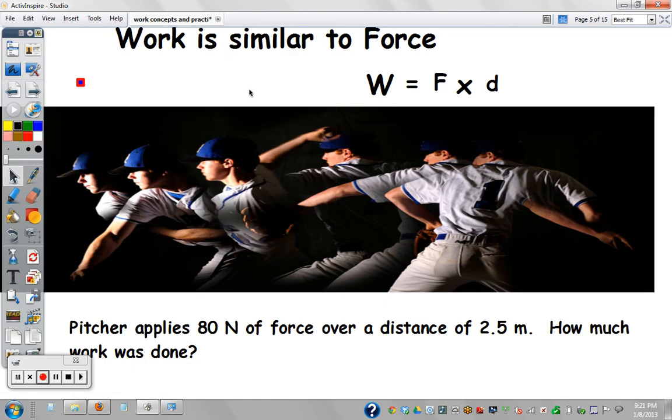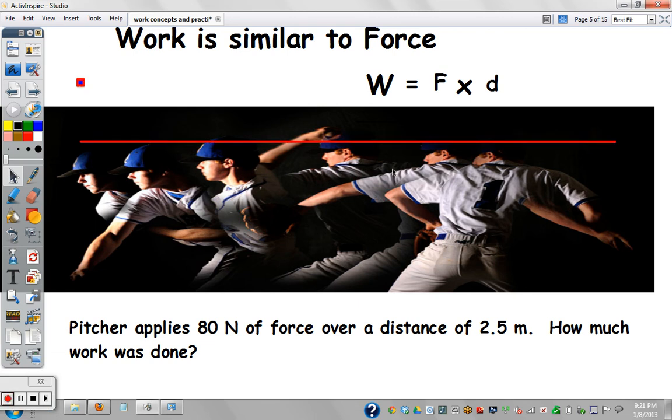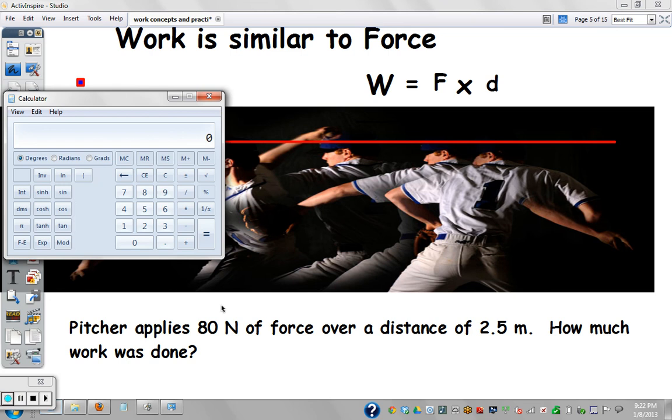So work is similar to force. Right? So force times distance. In this example, a pitcher applies, say, 80 newtons of force from all the way back at the end point of the throw. Applies the force to the ball all the way until the pitcher releases the ball. And we'll say this distance is 2.5 meters. If the applied force averaged 80 newtons over that distance, well, how much work was done?